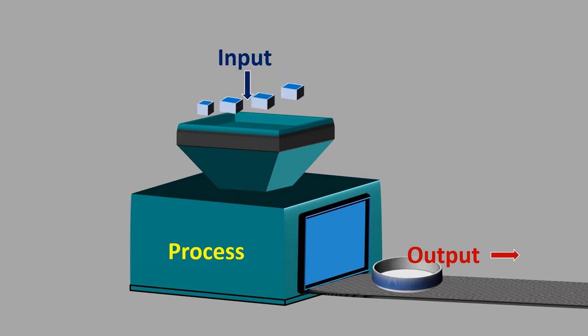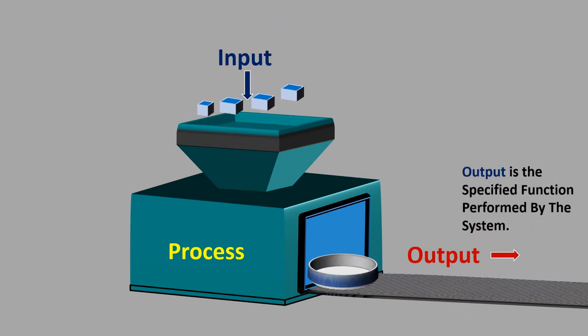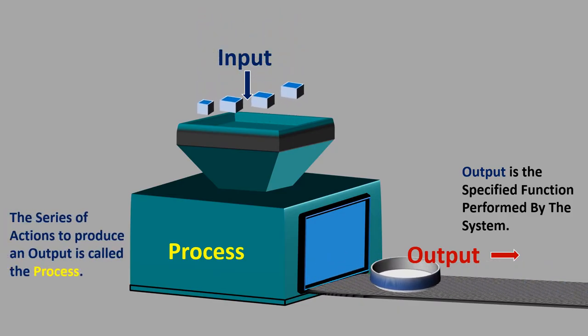The output is the specified function performed by the system. The system itself produces the output as a result of an input being supplied to it. The system changes the input using a series of mechanical or chemical operations to produce an output. This series of actions is called the process.